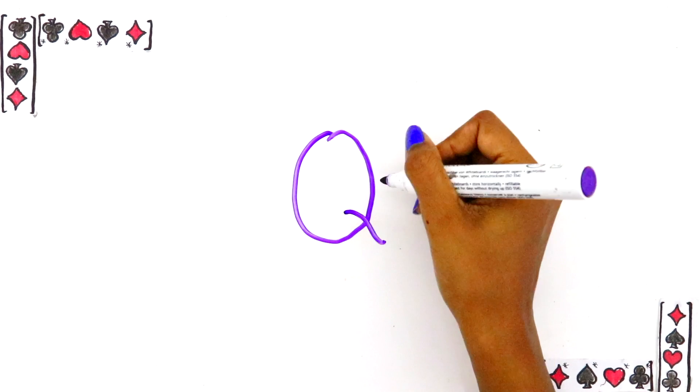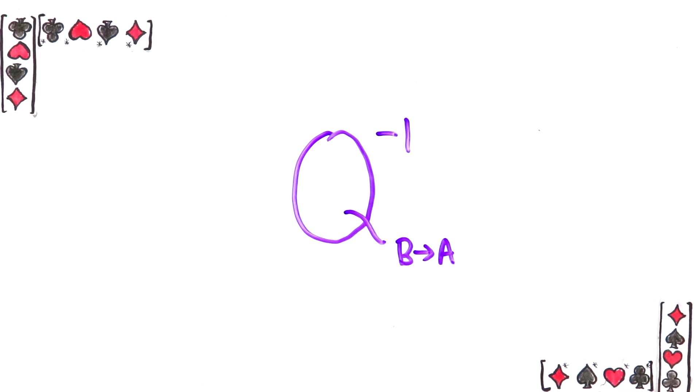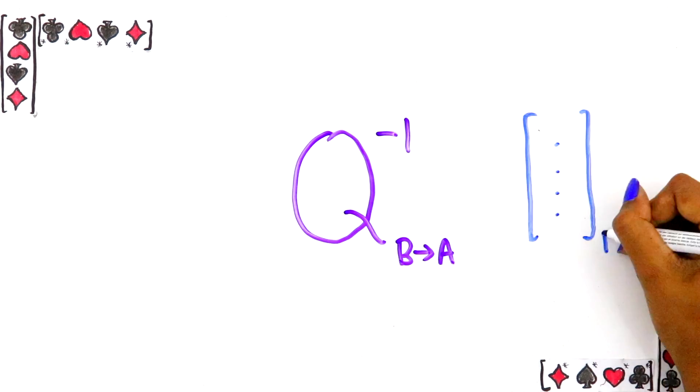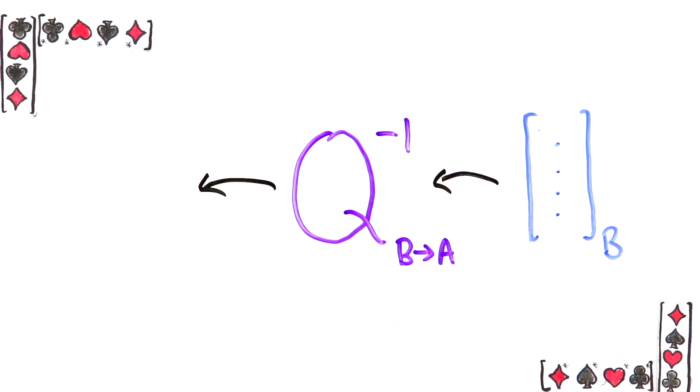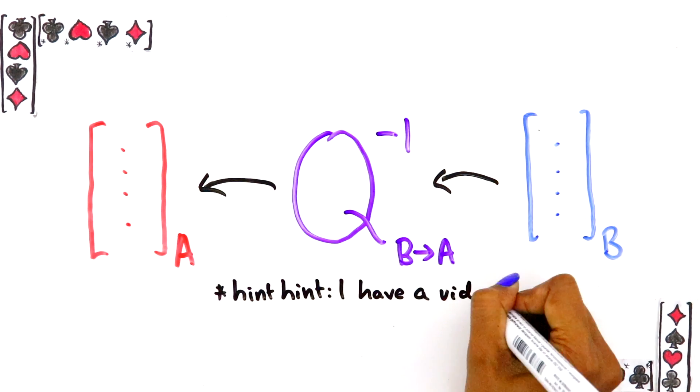For example, you can compute its inverse, which has an important property. The inverse takes a vector that's in Bob's basis and translates it back to Alice's basis. That's just because that's what inverses do, they undo the original matrix.